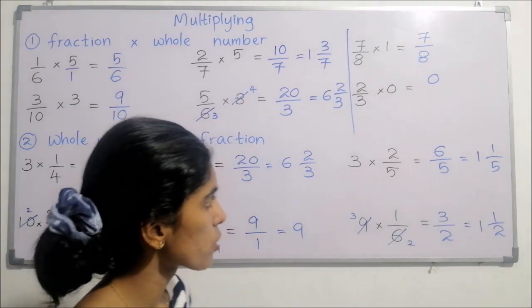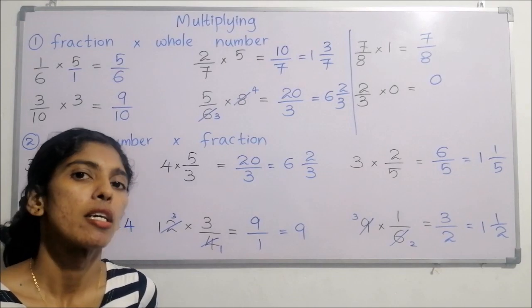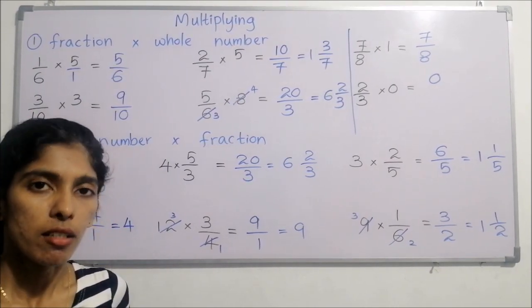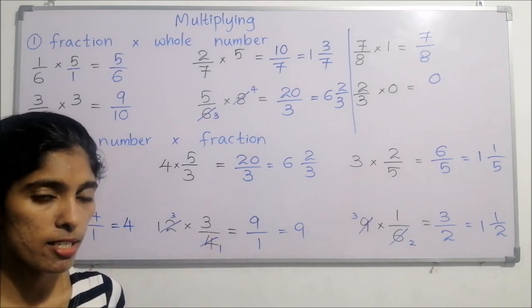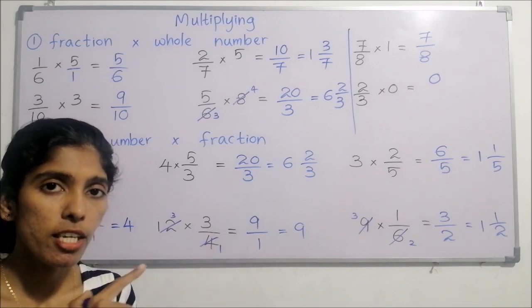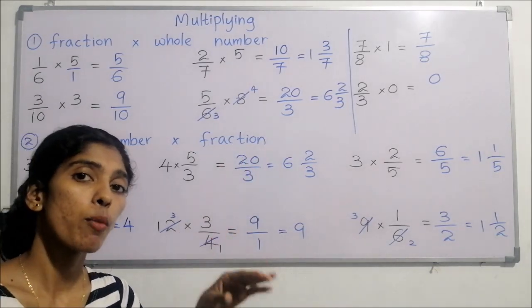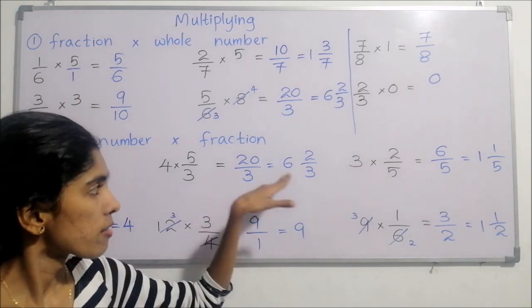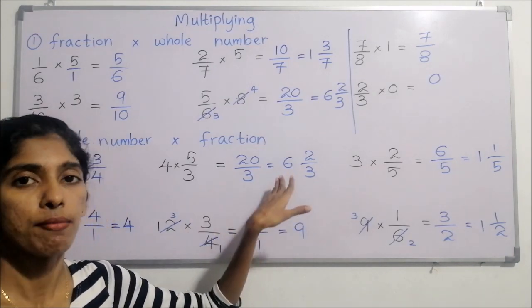Remember the two main things: first, simplify as much as possible by cancelling common factors in numerators and denominators. Second, after finding the answer, check whether it is an improper or proper fraction — if it is improper, you must convert it into a mixed number. That is compulsory.